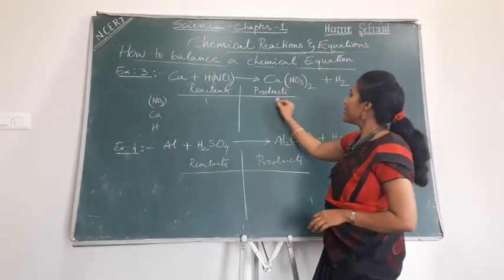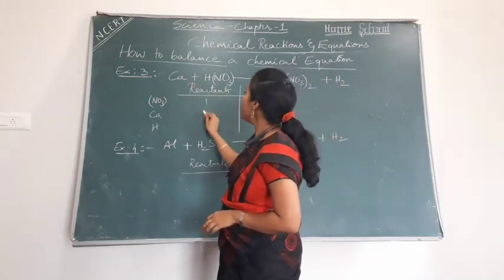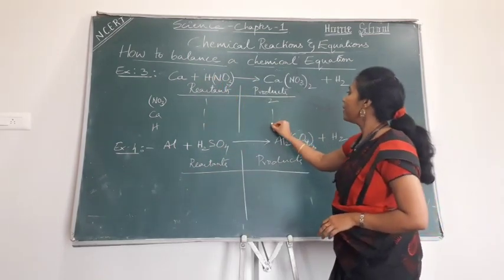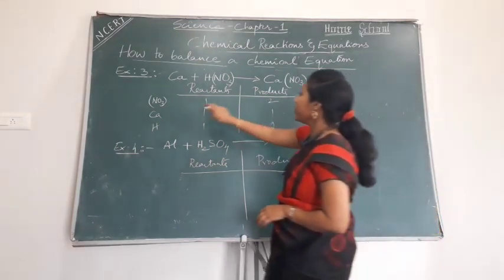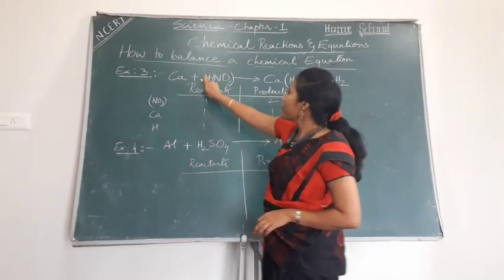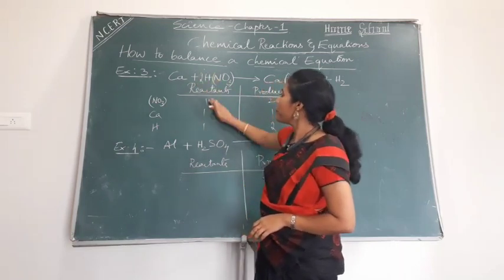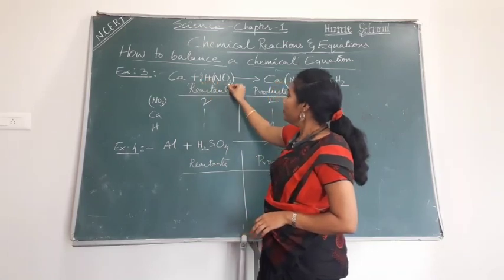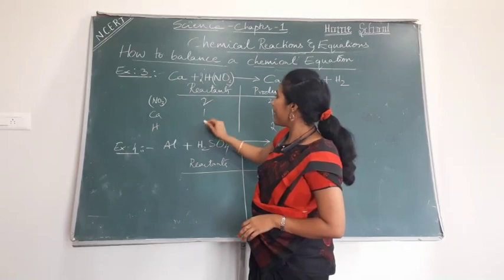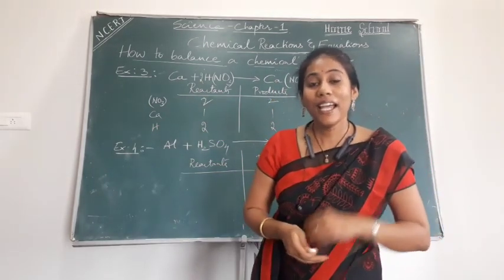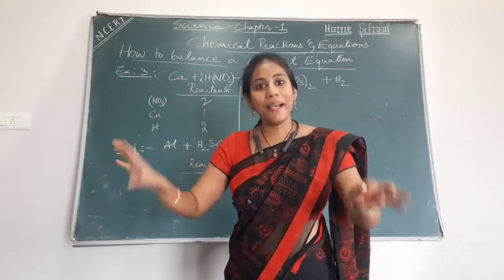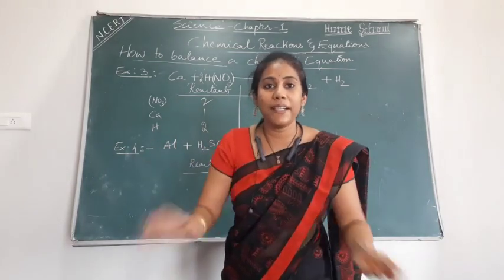List the counts: NO₃ — 1 on the reactant side, 2 on the product side. Calcium: 1 and 1. Hydrogen: 1 on the reactant side, 2 on the product side. NO₃ is unbalanced — the product side has more, so put 2 in front of HNO₃. Now NO₃: 2 = 2. Hydrogen: 2 = 2. Calcium: 1 = 1. Everything is balanced. Always cross-check all elements after placing each coefficient.